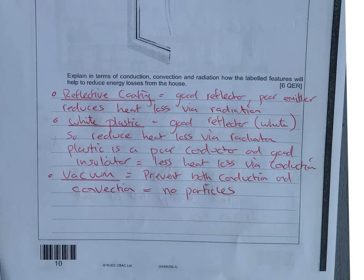We're talking about the reflective coating first. Well, a good reflector is a poor emitter of heat, so that's going to reduce heat loss via radiation. Your white plastic, again the same sort of thing because it's white, it's a good reflector, so it's going to reduce heat loss via radiation. But because it's plastic, plastic is a poor conductor of heat but a really good insulator, which means there's less heat loss via conduction.